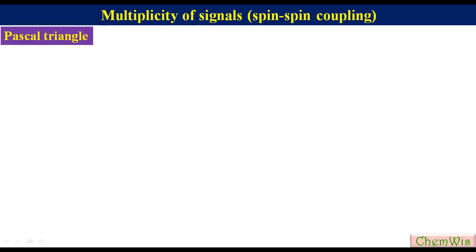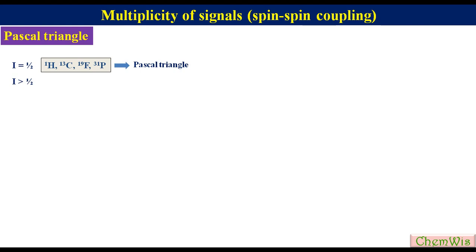The multiplicity of a Proton NMR signal and relative intensities of different peaks in the signal due to first-order coupling with a group of equivalent nuclei can easily be determined using the Pascal triangle. For coupling with nuclei having I = 1/2, such as ¹H, ¹³C, ¹⁹F, and ³¹P, the Pascal triangle is used. For nuclei with I greater than 1/2, we use the Pascal-type triangle, which is covered in a separate lecture linked in the description of this video.